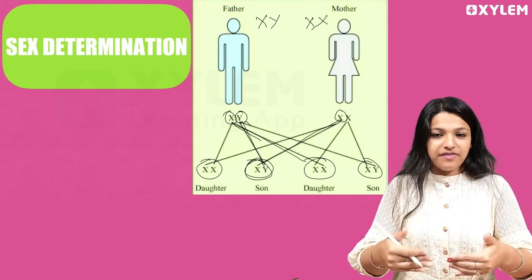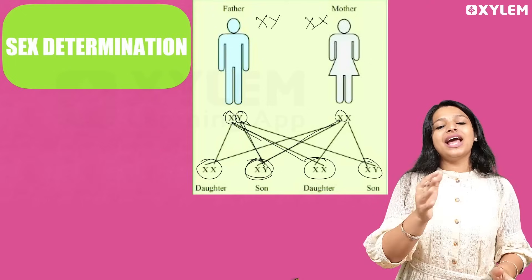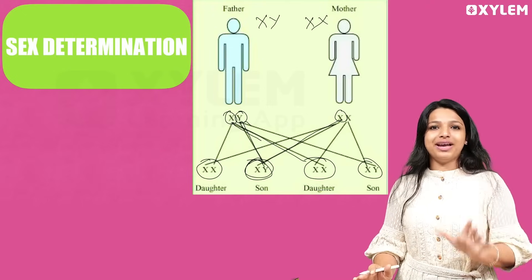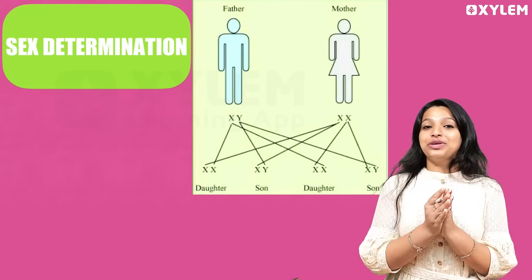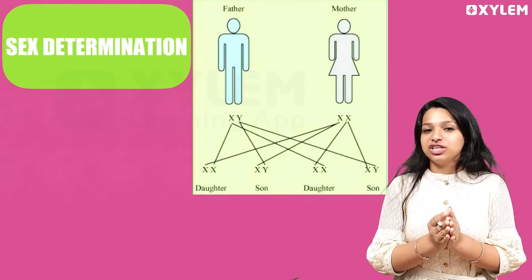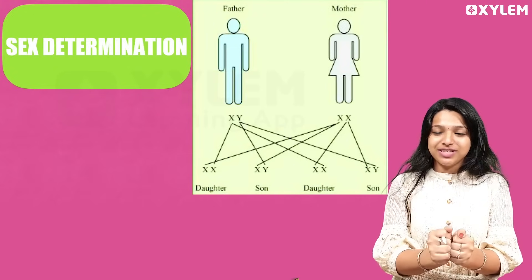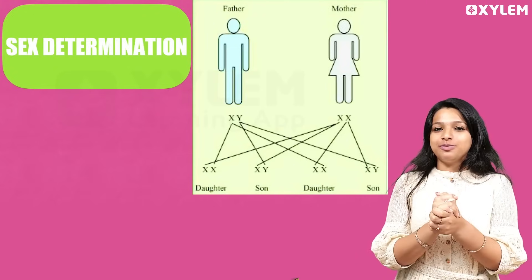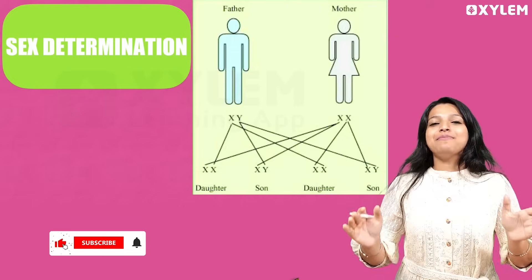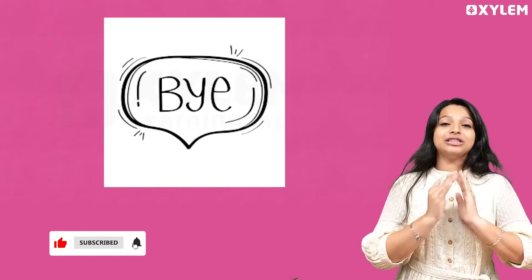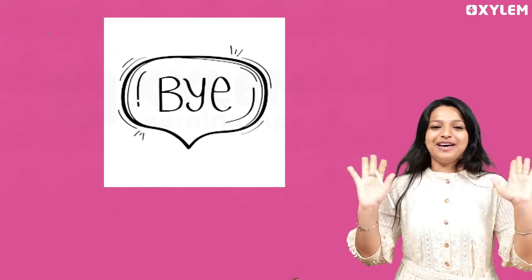The chromosomes are passed to the next generation in this ratio. So that is how we determine sex. In this whole chapter we studied Mendel's experiments, the pea plant, monohybrid cross, dihybrid cross, sex determination, the ratios, and the laws. Bye, see you, love you all!